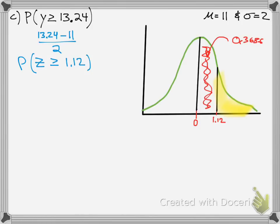Then, if we want to find this area, we know that this half is 0.5, and since it's symmetric, that this half is also 0.5. So, all you got to do is take 0.5 minus the 0.3686.